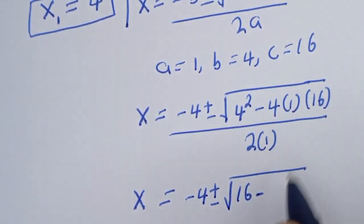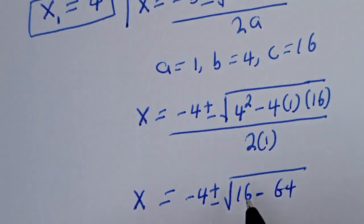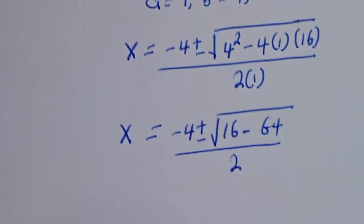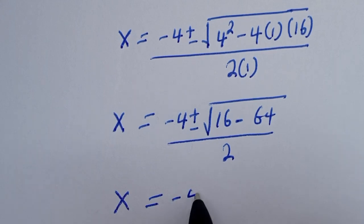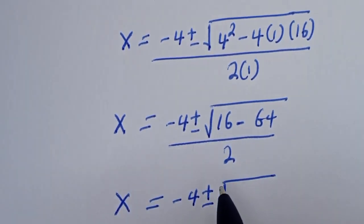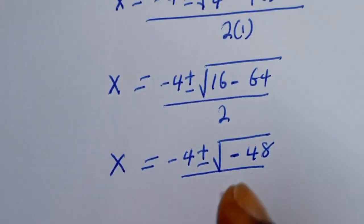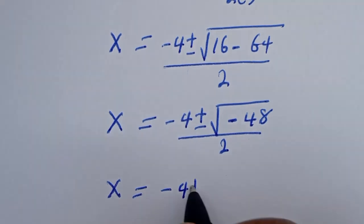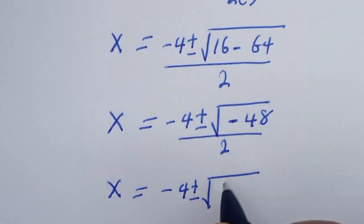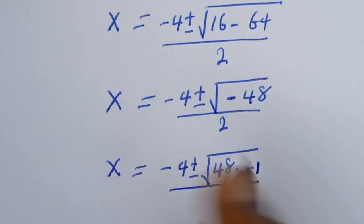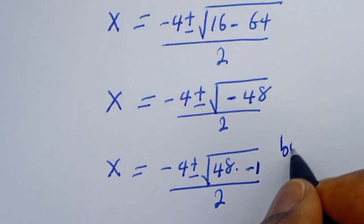Over 2 times 1. We have s is equal to (−4 ± √(16 − 64)) / 2, that is (−4 ± √(−48)) / 2. We can write −48 as 48 multiplied by −1.